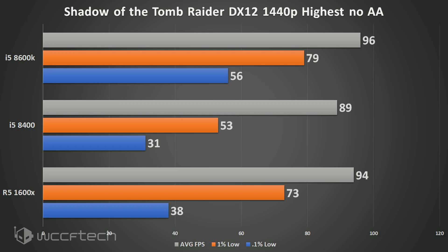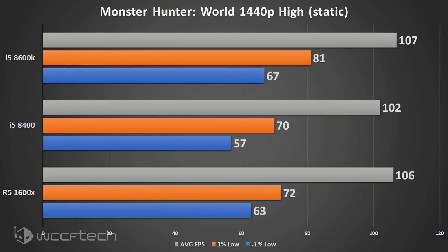Moving into Monster Hunter World — a fairly CPU-intensive game where more CPU is always better — the 1600X and 8600K perform very close to each other, again showing the i5 8400 trailing by a fair margin.